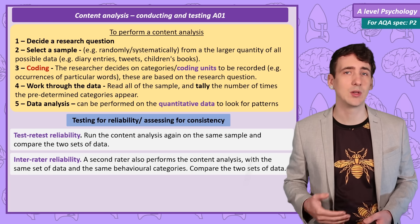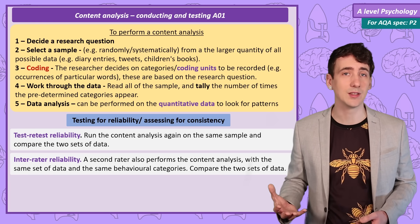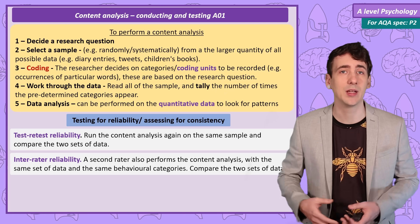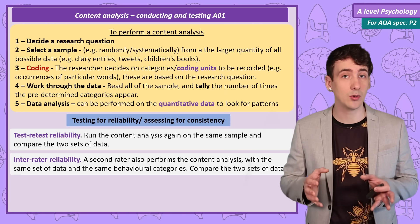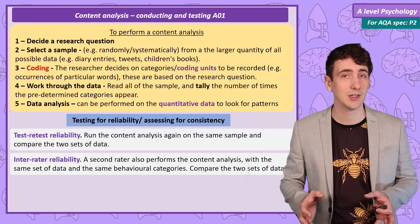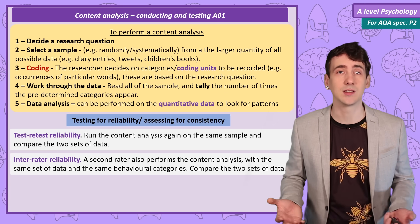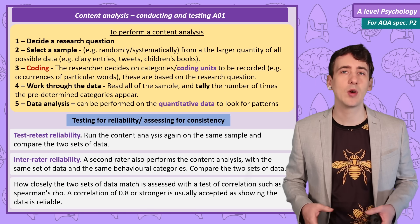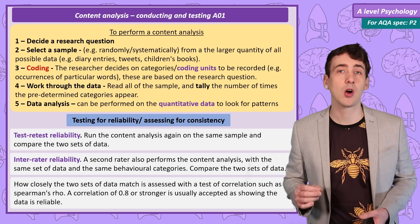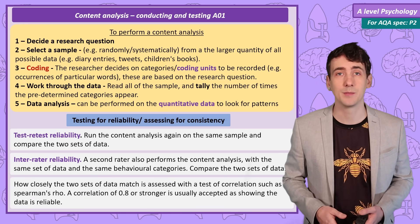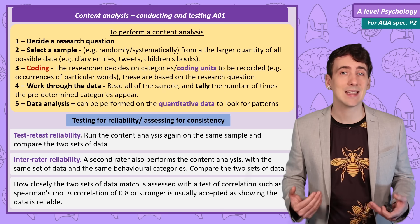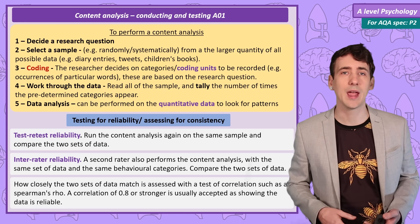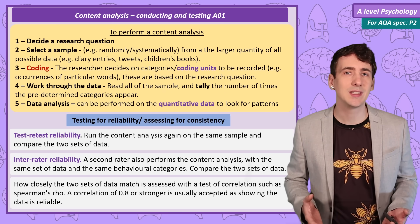Inter-rater reliability would mean that you'd have to get a second rater. So two researchers complete the same content analysis separately, tallying using the same set of agreed operational categories. Then they can compare the two sets of data. For both test-retest and inter-rater reliability, we're looking at how much correlation we have between the two sets of data. Researchers will generally accept a correlation coefficient of 0.8 as showing the data is reliable.